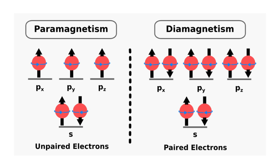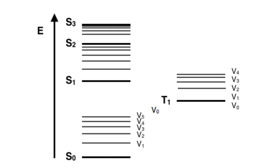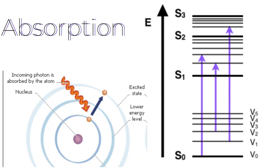Now let's delve into the processes depicted on the Jablonsky Diagram, including absorption, fluorescence, and phosphorescence. Absorbance involves the rapid excitation of an electron from a lower energy level to a higher one, indicated by an upward arrow on the diagram.